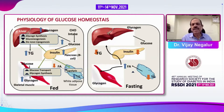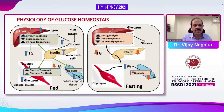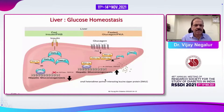In the fasting state, the reverse happens. There is less insulin, so there is more glycogenolysis, more gluconeogenesis, and reduced de novo lipogenesis. Lipolysis also takes place, which works as a source of energy for the muscle. That's how the muscle gets its energy.